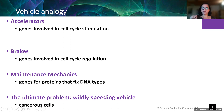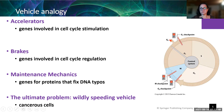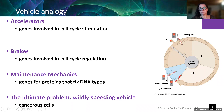The wildly speeding vehicle is what we mean by cancerous cells — cells whipping through the cell cycle, and every time they finish a lap you've got double the number you started with. If the checkpoint proteins or genes are defective somewhere, the cells move through the cycle faster and make more copies of themselves. That's what we call cancer.